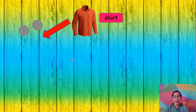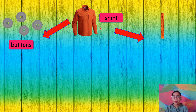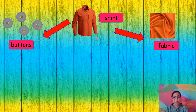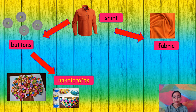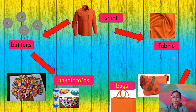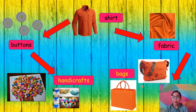Let's review. This is a shirt. The materials that make up a shirt are buttons and fabric. Then, the buttons are assembled into handicrafts. Also, the fabric can be assembled into bags. Do you understand?